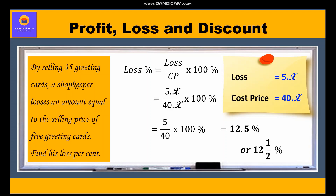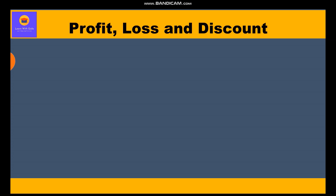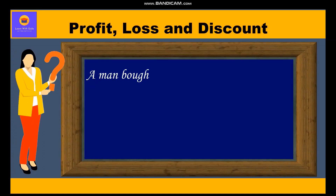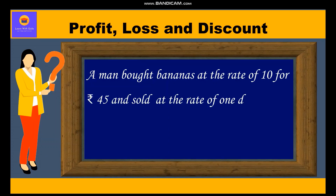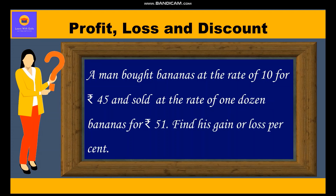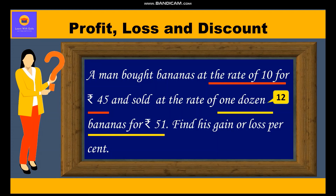Now let's move to the second question. A man bought bananas at the rate of 10 for rupees 45 and sold at the rate of one dozen bananas for rupees 51. Find his gain or loss percent. Here, the man is buying bananas at the rate of 10 for ₹45, but while selling, he is selling one dozen — that is 12 bananas — for ₹51.